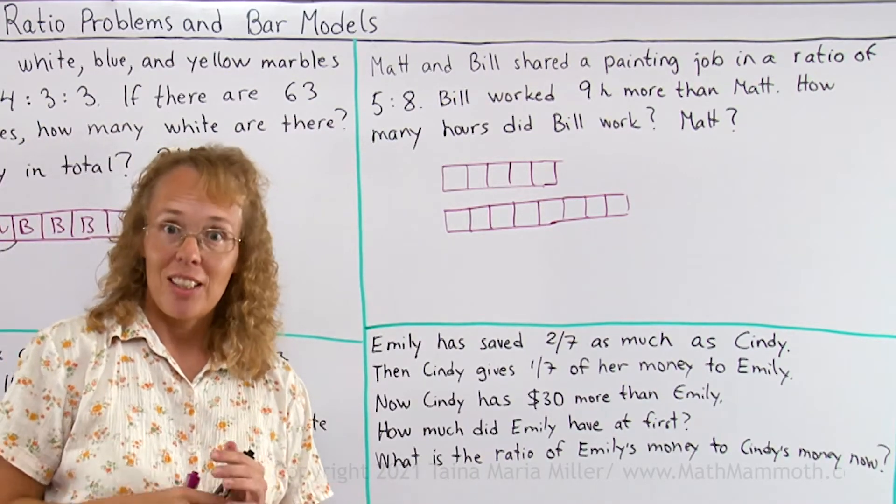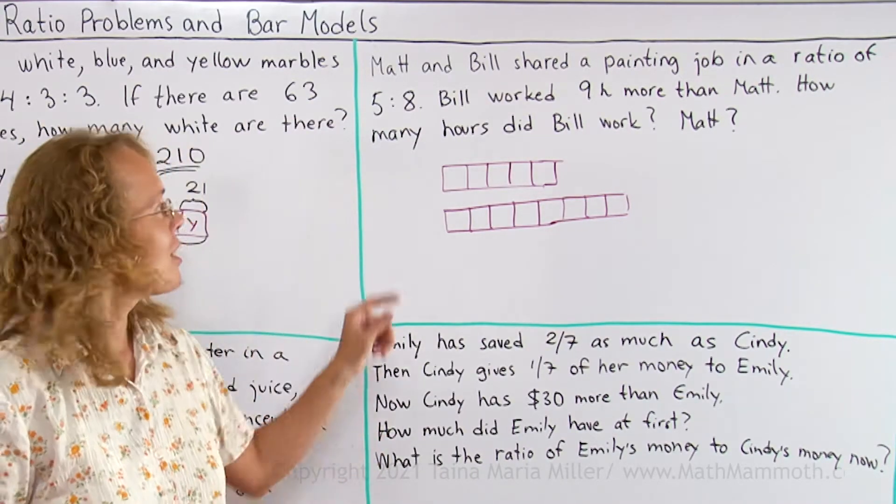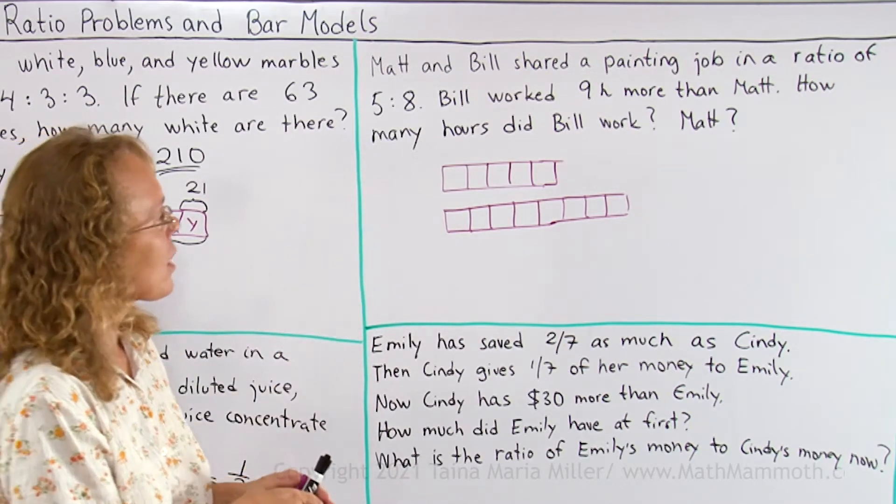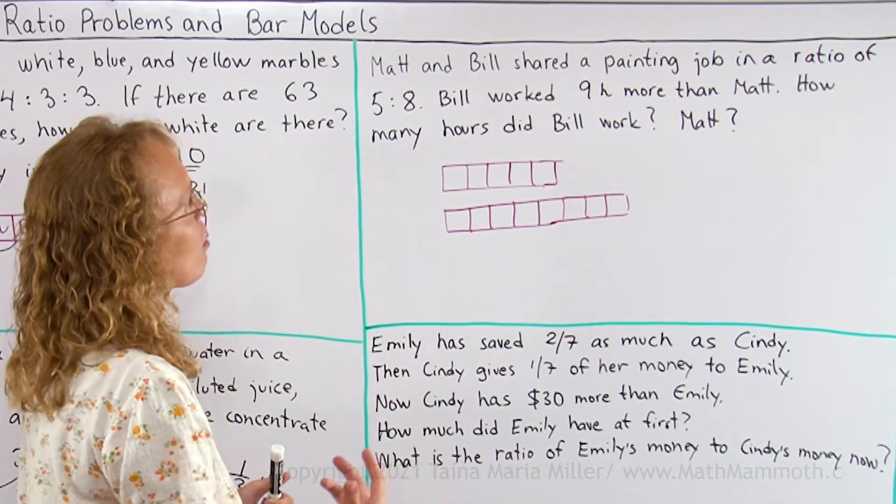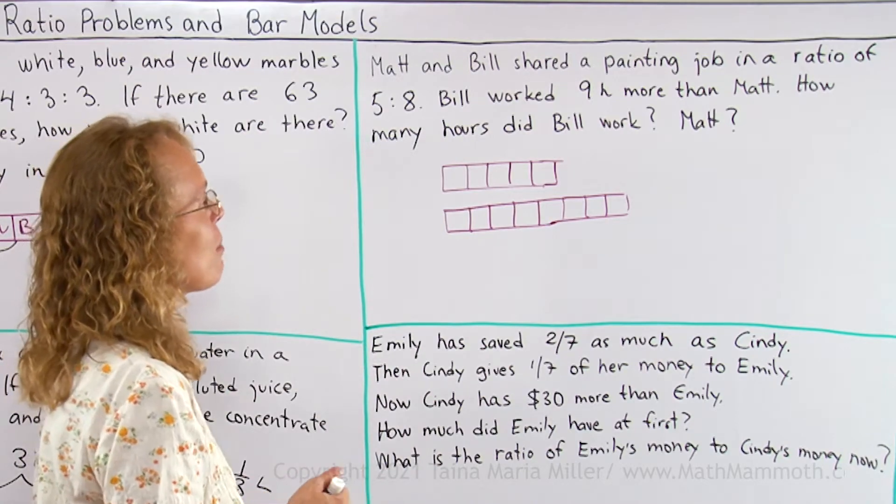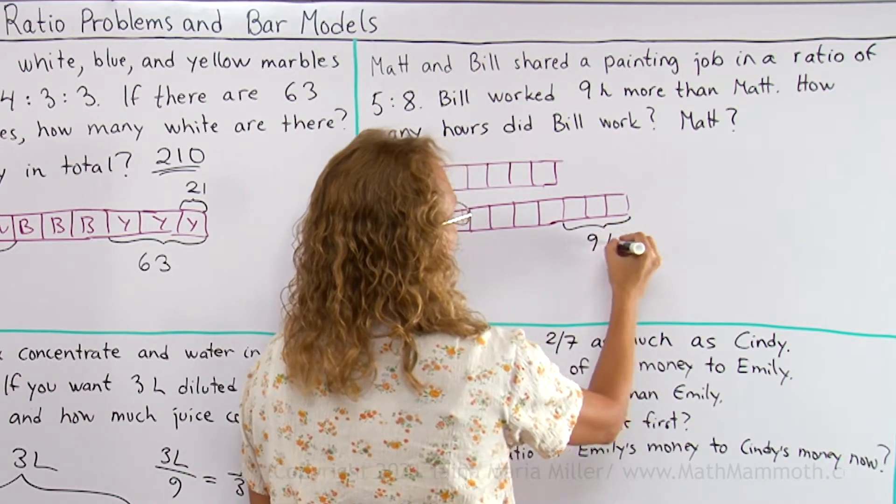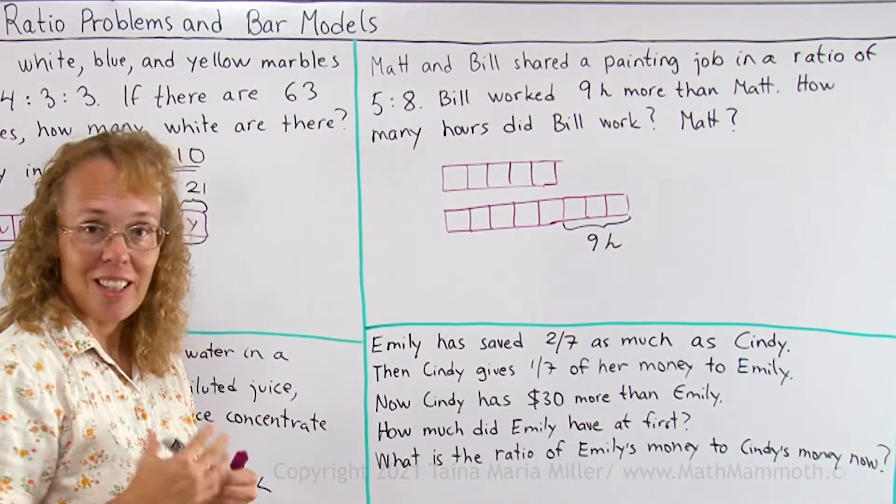It is as if they divided the whole job into 13 parts, and Bill did 8 of it, and Matt did 5. And now it says that Bill worked 9 hours more than Matt. See, this is what Bill worked more than Matt, right? This is 9 hours. Three of my blocks are 9 hours.